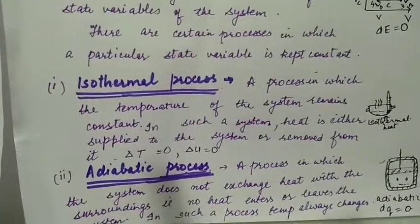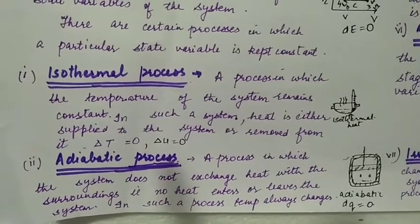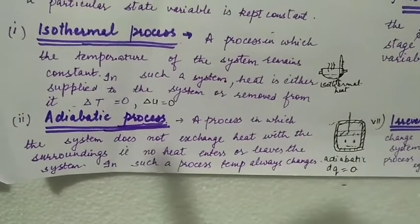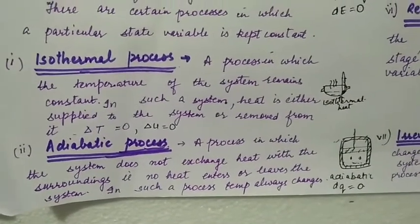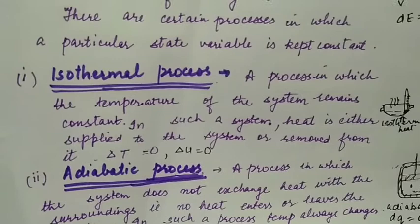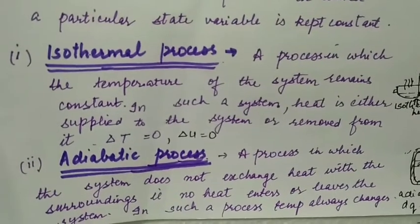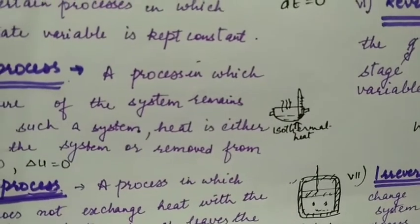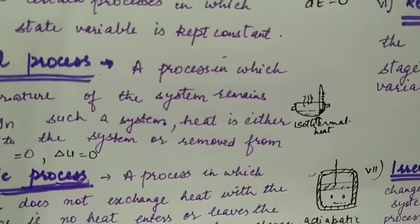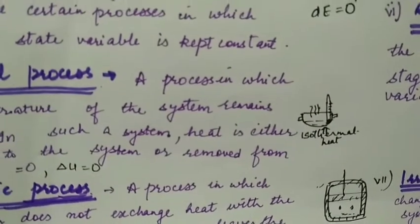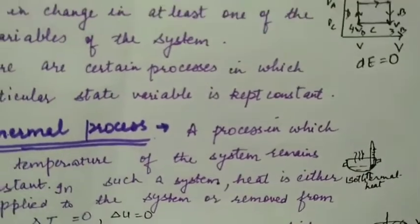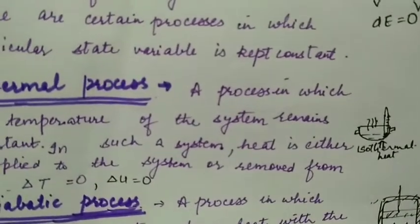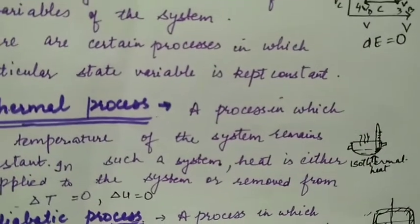Isothermal process: a process in which the temperature of the system remains constant is called isothermal. Iso means same, thermal means heat or temperature. So the process in which temperature remains constant is called isothermal process. For example, here is a hot cup of coffee - we measure its temperature with a thermometer.